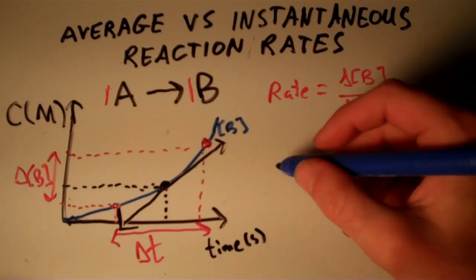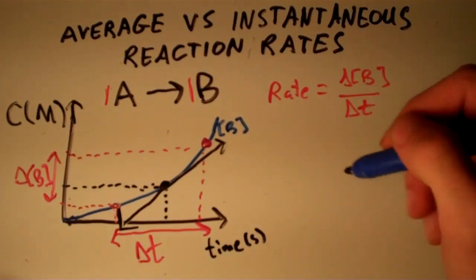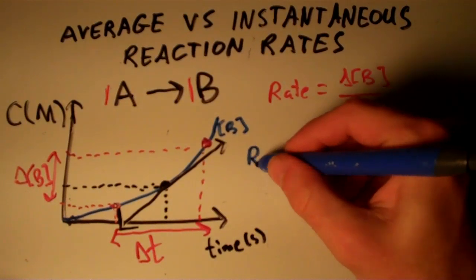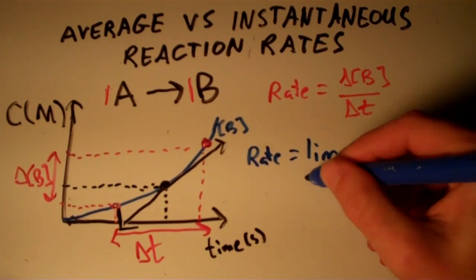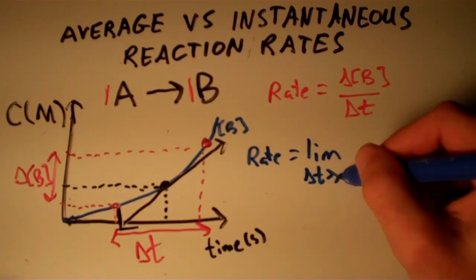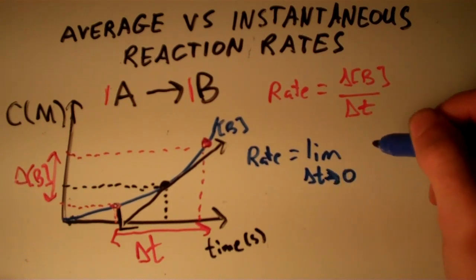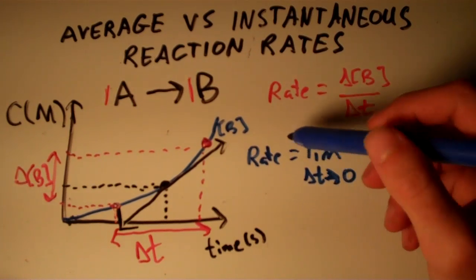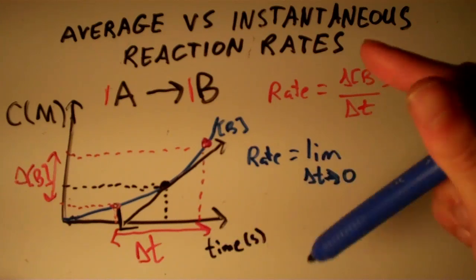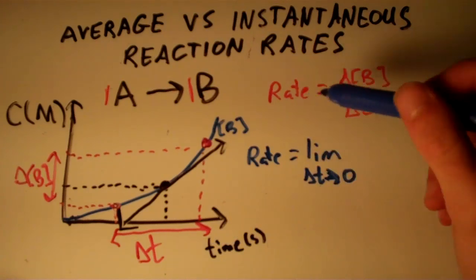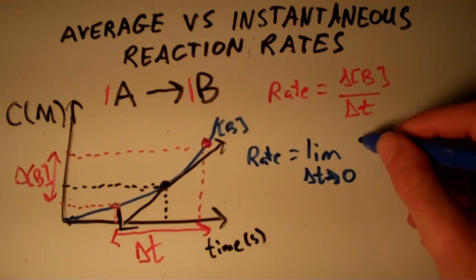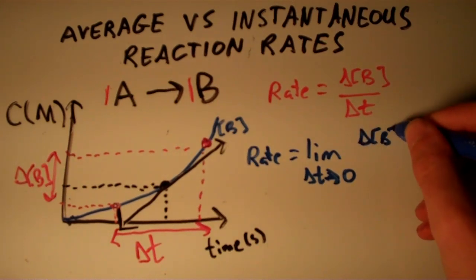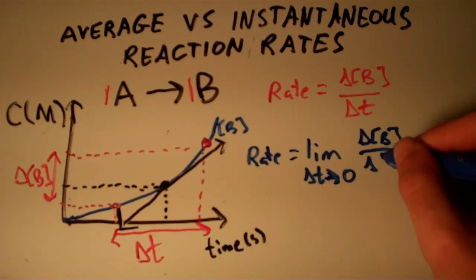That means we're going to end up expressing this as a limit. We say that the rate is equal to the limit as delta T approaches zero, because we're making our time interval smaller and smaller. The limit as delta T approaches zero of delta concentration of B over delta T.